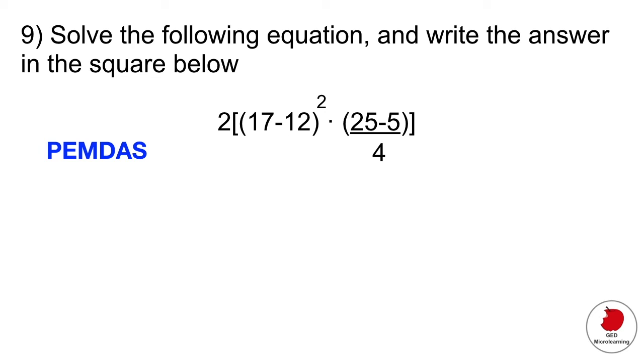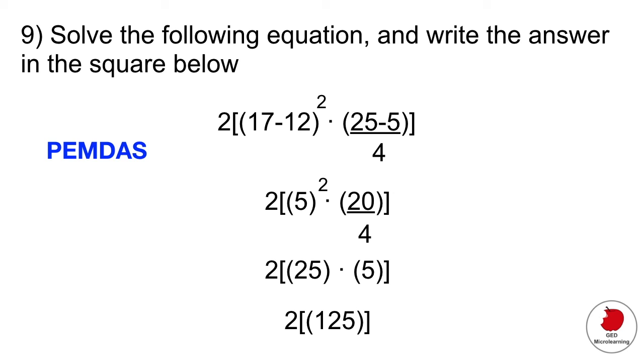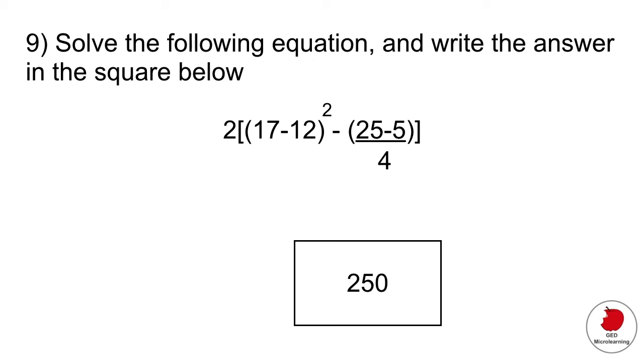Let's take it step by step. So let's work with the brackets first and solve that stuff first. 17 minus 12 is 5 and then 25 minus 5 is 20. So if we go ahead and solve for that, that would give us that amount, which is 125 multiplied by 2, so 250. Make sure that you always follow the correct order.